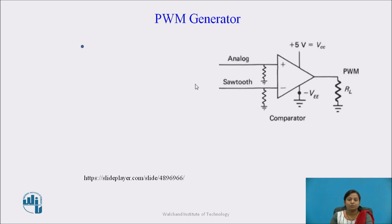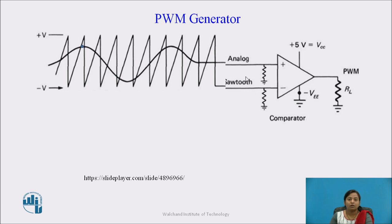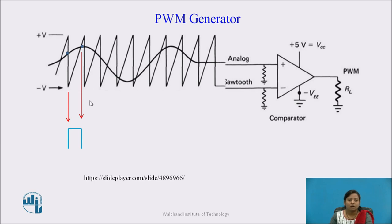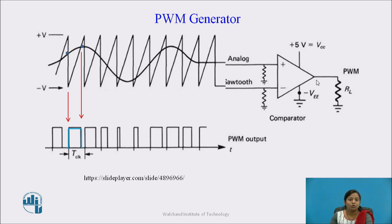The comparator gives a high output at the falling edge of the ramp signal, and the output remains high as long as the continuous time signal x(t) is greater than the ramp signal. At the point where the continuous time signal and ramp signal coincide, the comparator output becomes low. In this way, variable width pulses are obtained at the output of the comparator, and the width of pulses depends upon the change in amplitude of the continuous time signal. So, the PWM signal is obtained at the output of the comparator.